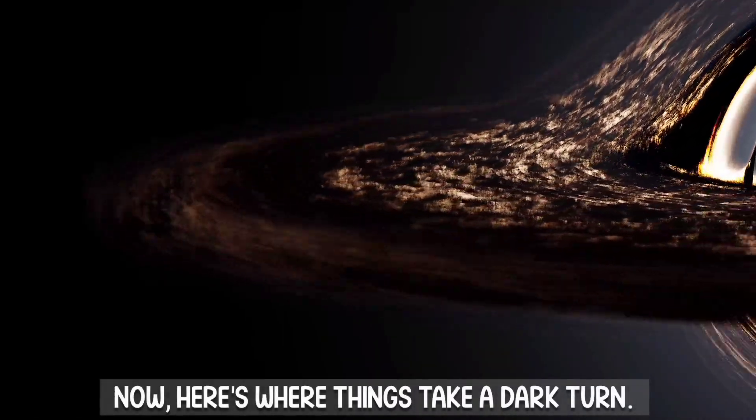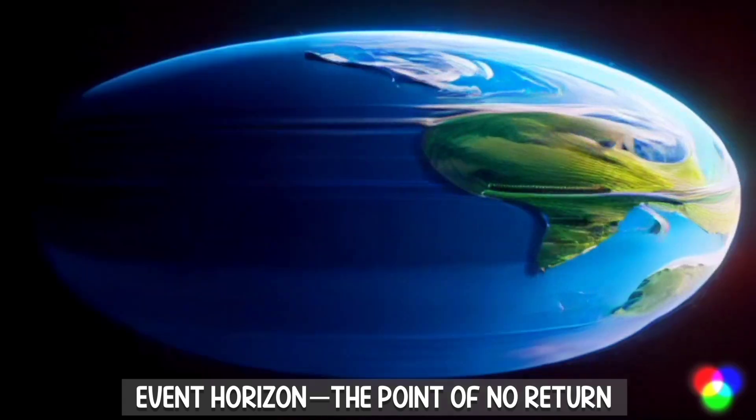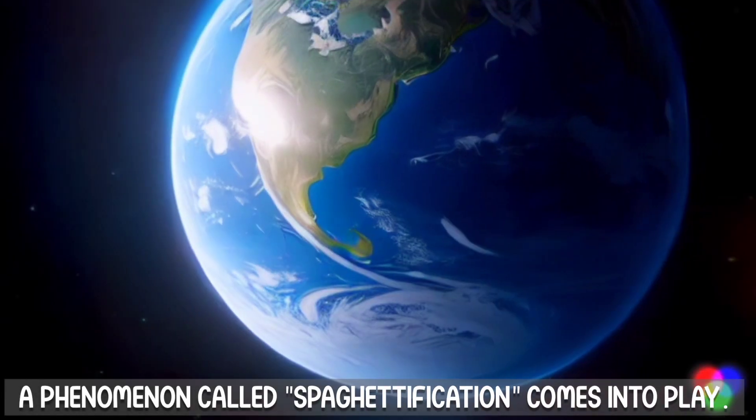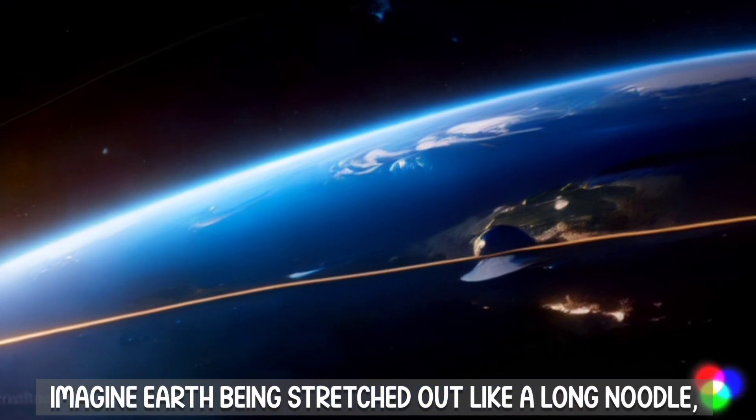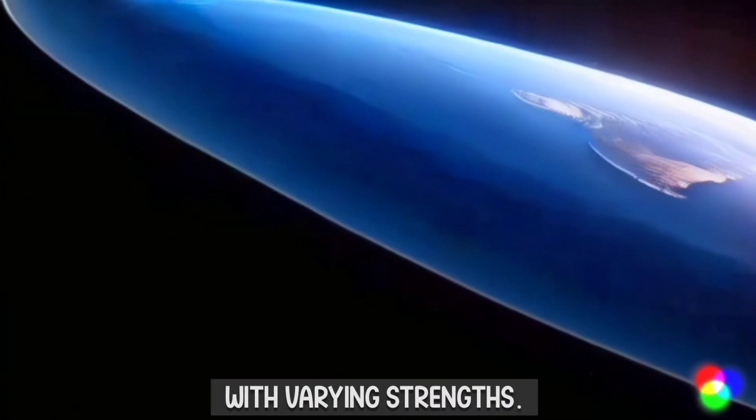Now, here's where things take a dark turn. As Earth ventures closer to the black hole's event horizon, the point of no return, a phenomenon called spaghettification comes into play. Imagine Earth being stretched out like a long noodle, as gravitational forces pull on different parts of our planet with varying strengths.